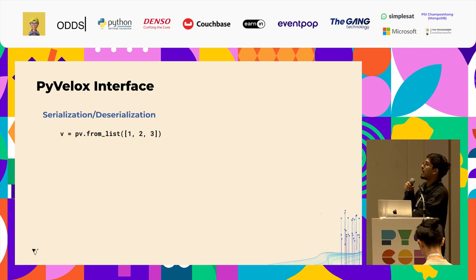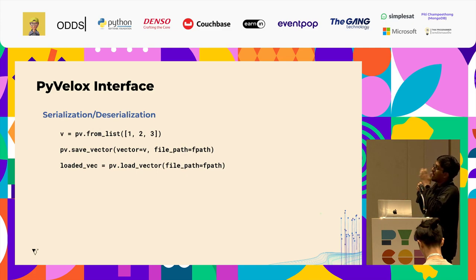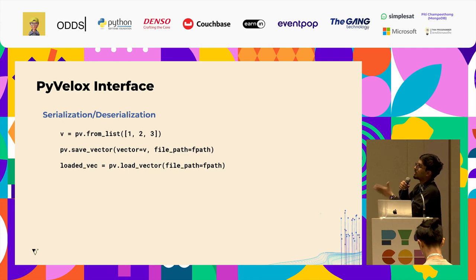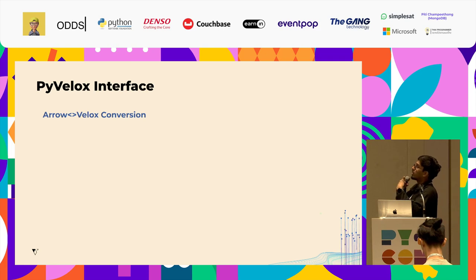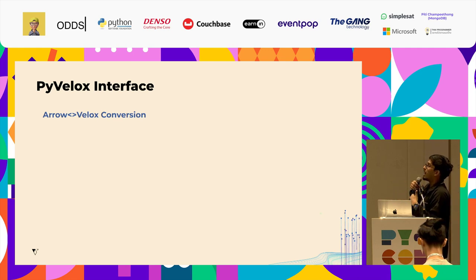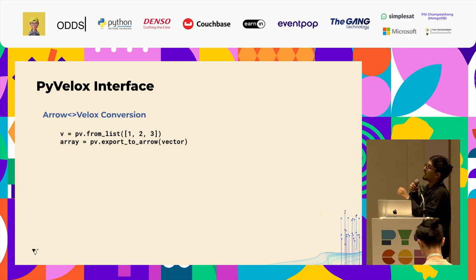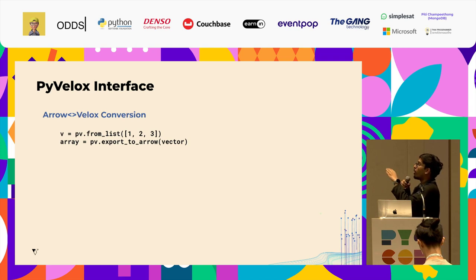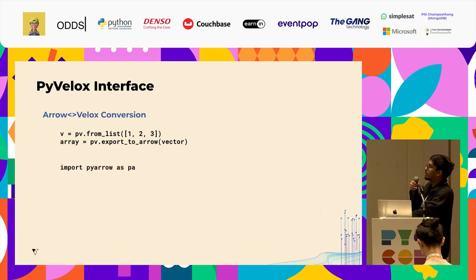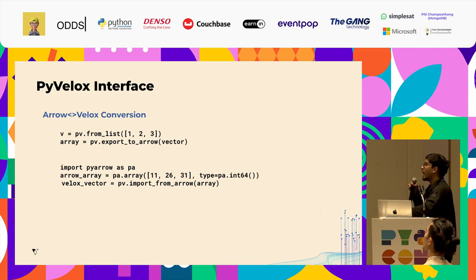Velox also supports serialization and deserialization. If you have a Velox vector, you can save it to secondary memory using the save vector method, and similarly load it back. Right now it only saves using the LZ4 compression algorithm, but we're also exploring different compression algorithms and ways to save to secondary memory. Velox also supports converting to and from Arrow arrays, since Arrow is becoming the new benchmark for columnar data formats. You can call the export-to-Arrow method and the vector gets automatically converted to an Arrow-compatible object, with checks for data type compatibility, memory pools, and inconsistencies. Similarly, you can call import-from-array to convert an Arrow array into a Velox vector.